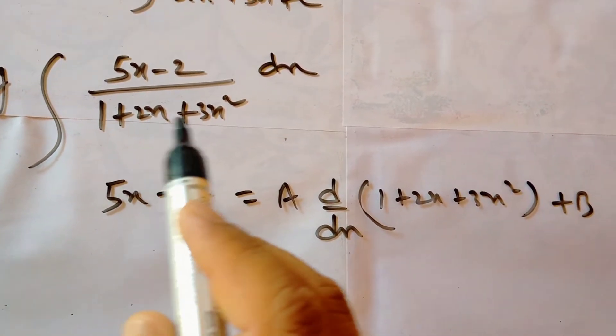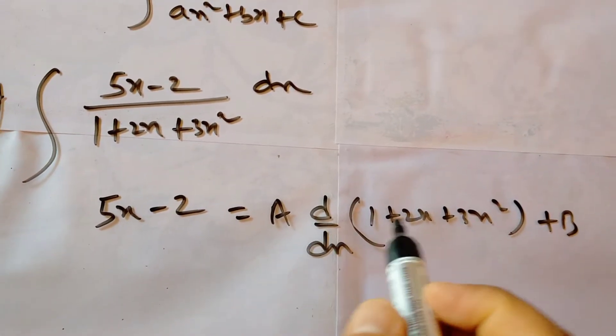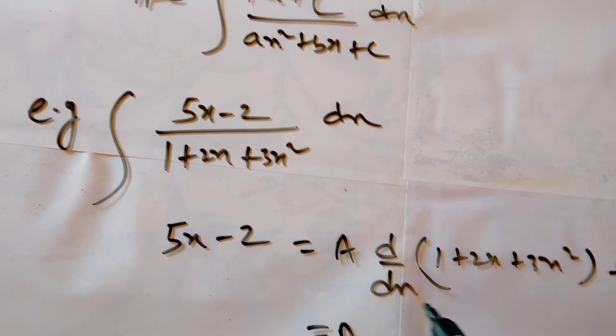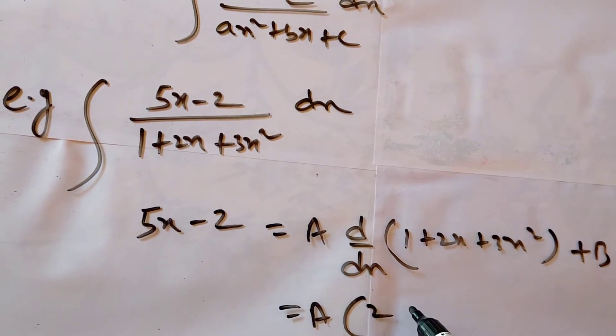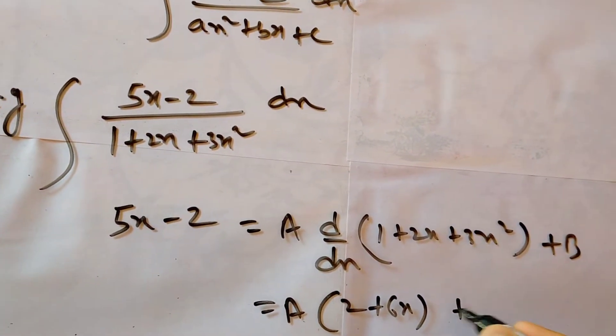In this type kya karenge, is ka differentiation karo. Is ka differentiation aapka ho gaya, A, 1 ka differentiation 0, yeh 2 ho gaya, yeh 6x ho gaya. Thik, plus B.